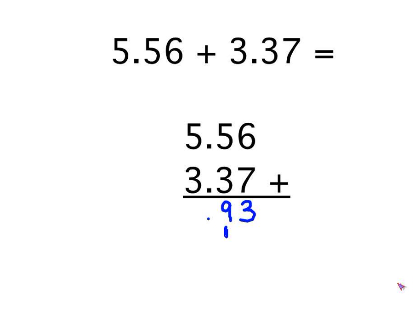Next column, we've got the decimal points. So bring that down there. And finally, the last column, 5 add 3 is 8. So our answer is 8.93.